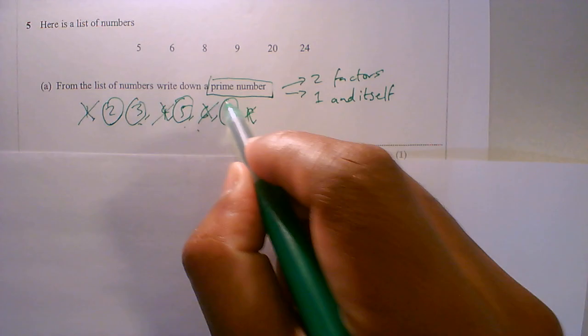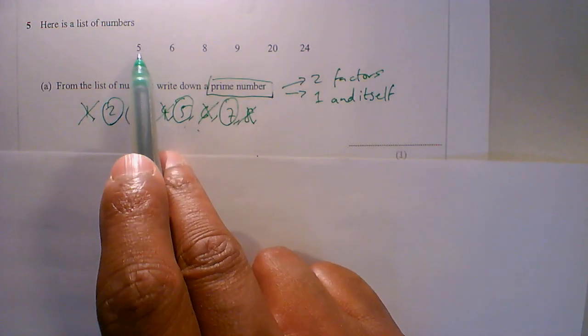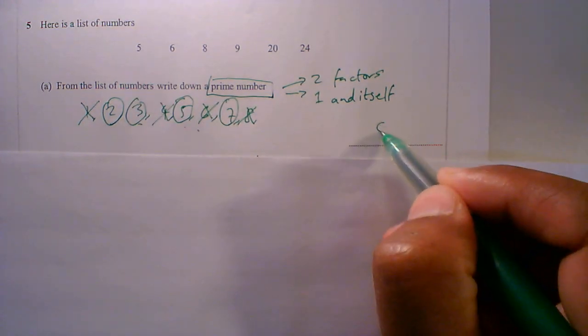5 is a prime number, 7 is a prime number. So if I look at this, I've got 5 there, so 5 is a prime number.